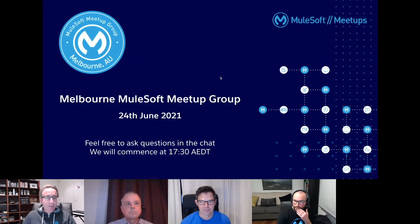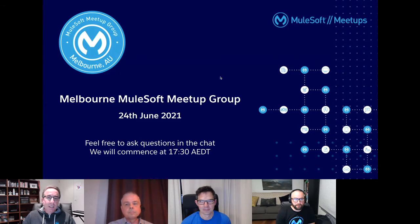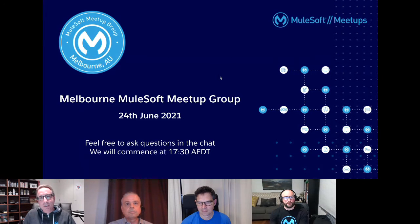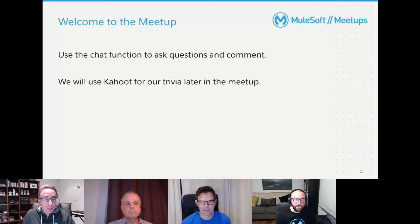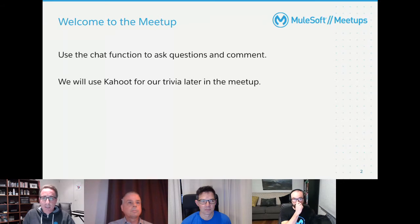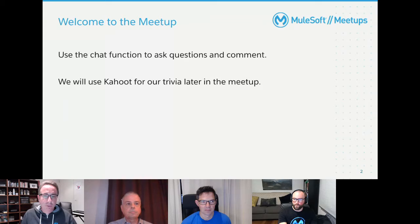A bit of housekeeping before we get started: use the chat function to ask any questions or make comments. Later on we will do a Kahoot game. For those who've attended our meetups before, you'll know the drill. It's recommended to use Kahoot on your mobile phone — there's an app you can download, or go to a web browser and search for Kahoot. I'll give you the address later, for the trivia at around 6:40.